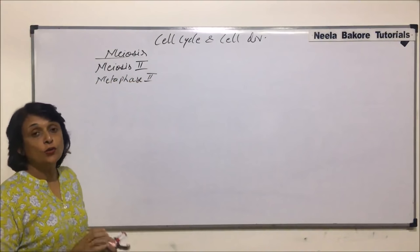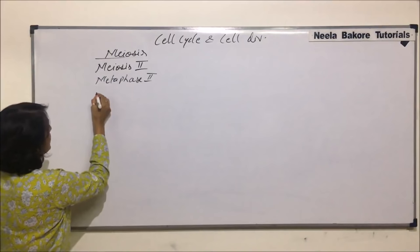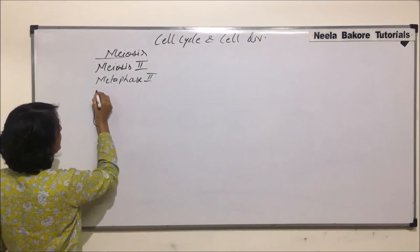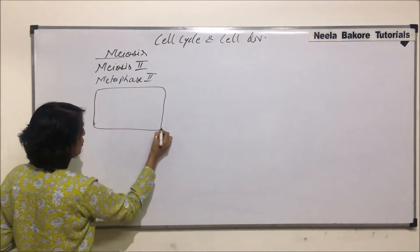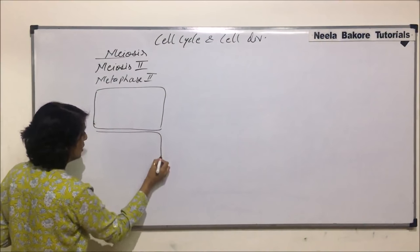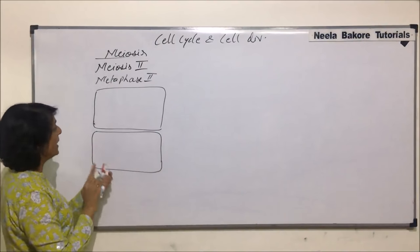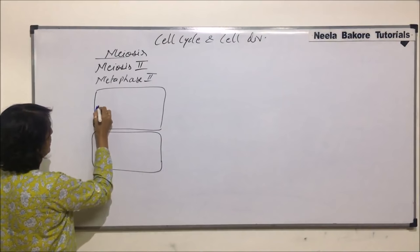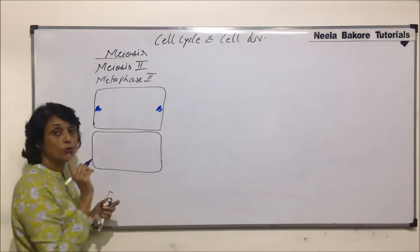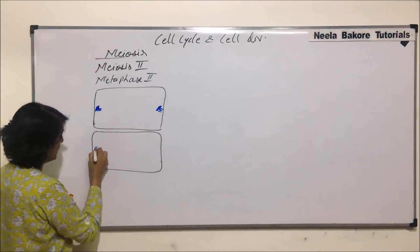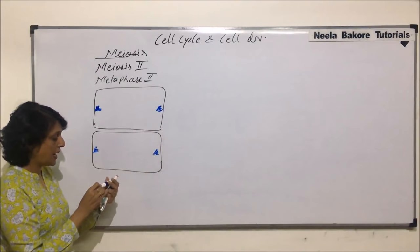In metaphase 2, the chromosomes align on the equatorial plane. Let us draw these two daughter cells. In metaphase, the chromosomes would align on the equatorial plane. We made the centrioles here, as the axis is going to be at right angles to what happened in meiosis 1 — that is, in prophase 1 and metaphase 1. So here it is at right angles.